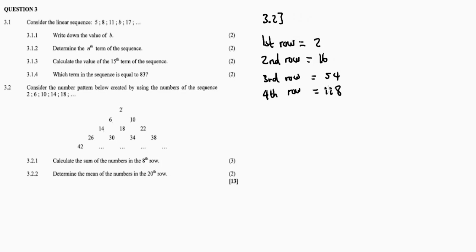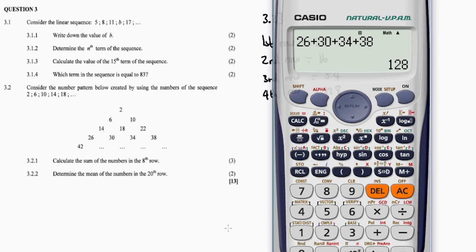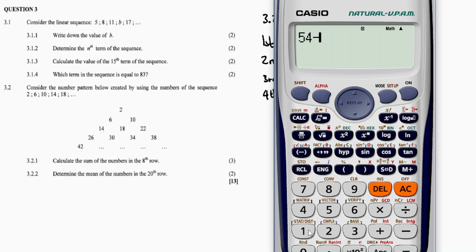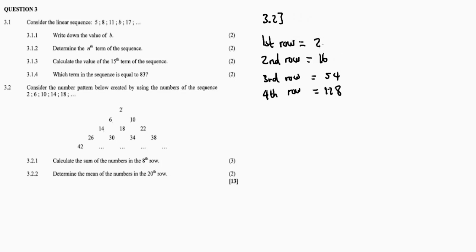Row 4 is 26 + 30 + 34 + 38 = 128. Now let's look for a pattern in the sums. 16 subtract 2 is 14, and 54 subtract 16 is 38 — there's no common difference, so this is not a linear pattern for the sums. That means we need to use inspection or trial and error to find the formula.